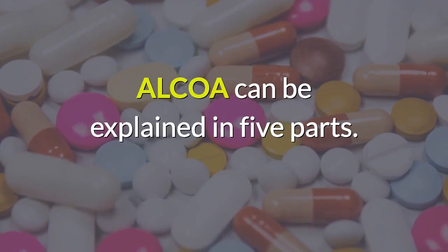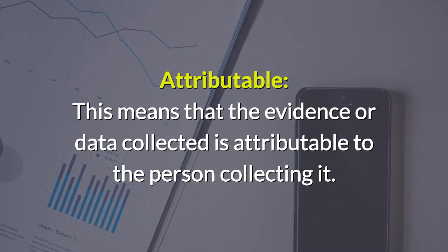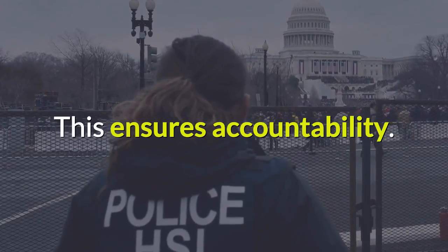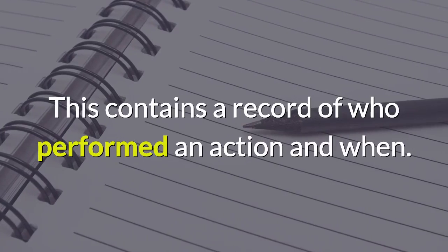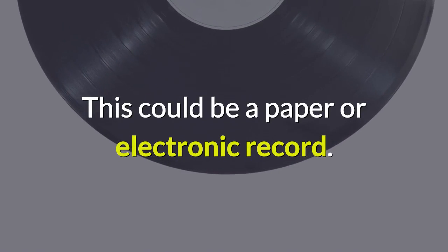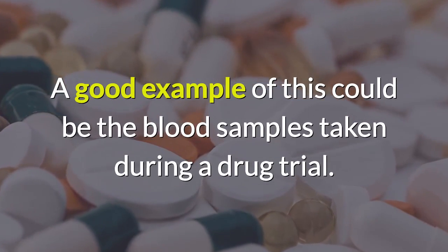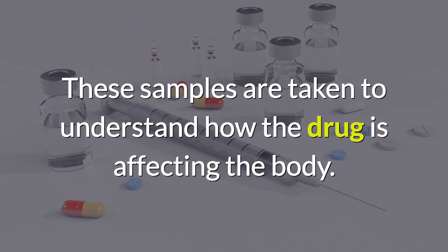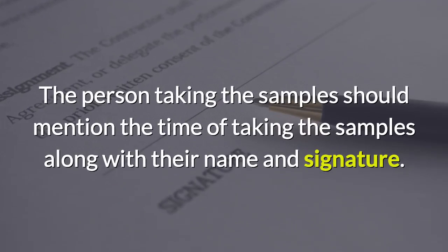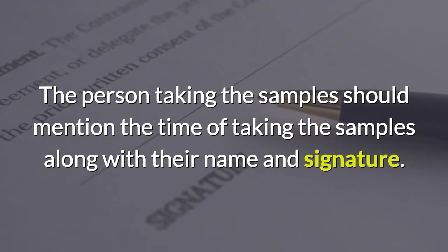ALCOA can be explained in five parts. Attributable: this means that the evidence or data collected is attributable to the person collecting it. This ensures accountability and contains a record of who performed an action and when, whether as a paper or electronic record. A good example is blood samples taken during a drug trial — these samples are taken to understand how the drug is affecting the body.